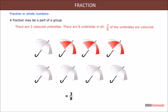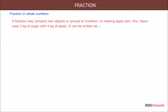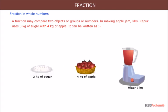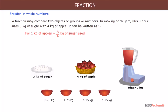A fraction may compare two objects or groups or numbers. In making apple jam, Mrs. Kapur uses 3 kg of sugar with 4 kg of apple. It can be written as: for 1 kg of apples, 3 upon 4 kg of sugar is used. This clearly indicates that 3 upon 4 kg of sugar is used to each kilogram of apple.